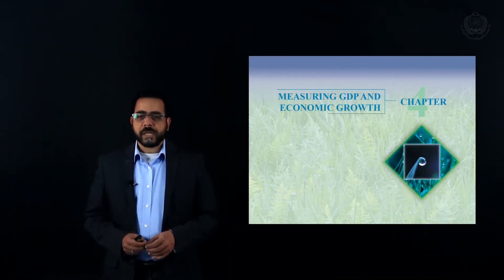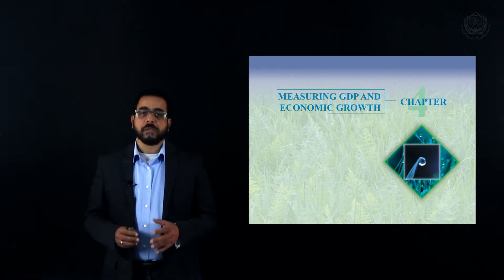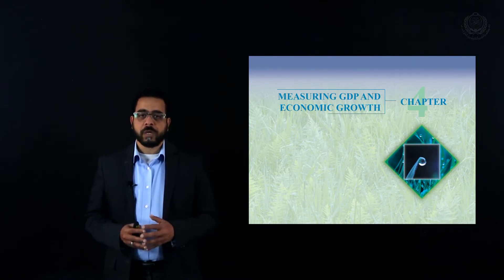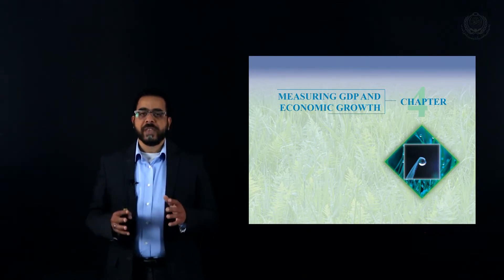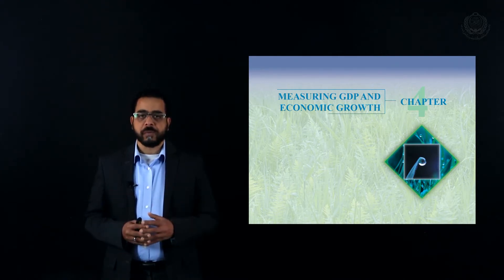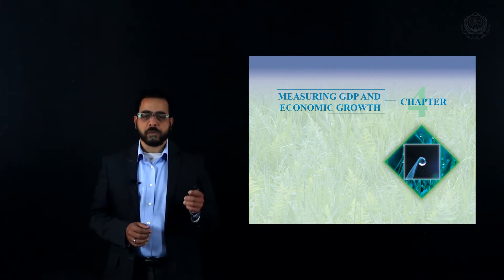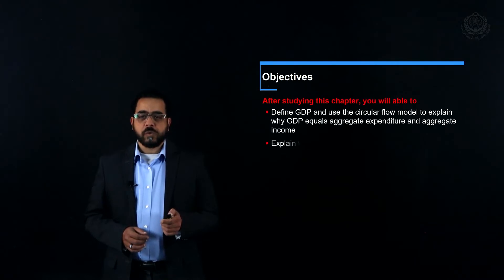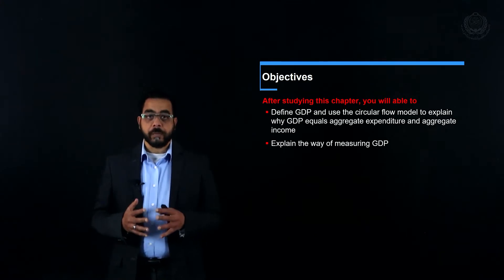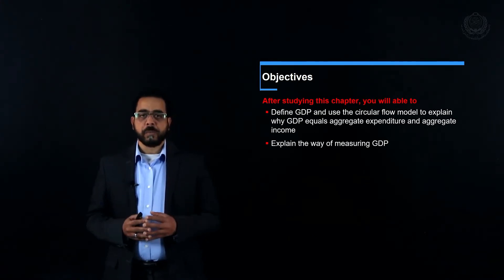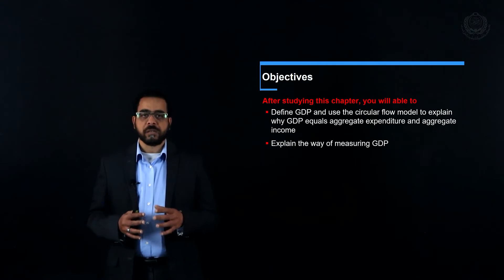Welcome everyone to our second lecture talking about measuring GDP and economic growth. In our first lecture we talked about the macroeconomic questions, and the first one was what determines the standards of living. We ended talking about how it is determined through the average income per person. So how do we calculate the average income per person? That is our topic for today. Like any company tries to figure out its financial results, a country also tries to figure out its economic results. One of the main indicators for economic performance is the GDP.